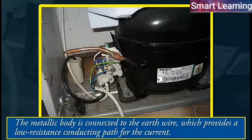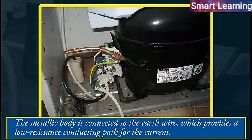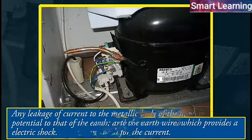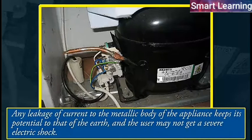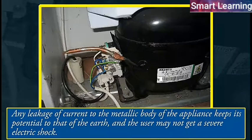The metallic body is connected to the earth wire, which provides a low resistance conducting path for the current. Thus, it ensures that any leakage of current to the metallic body of the appliance keeps its potential to that of the earth, and the user may not get a severe electric shock.